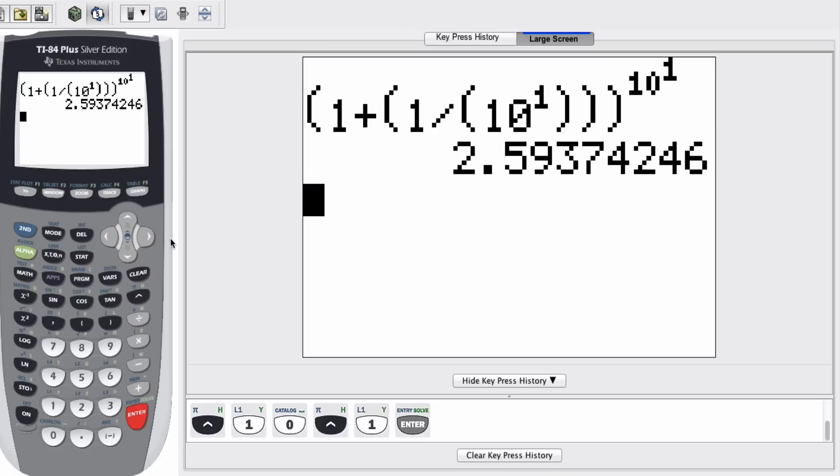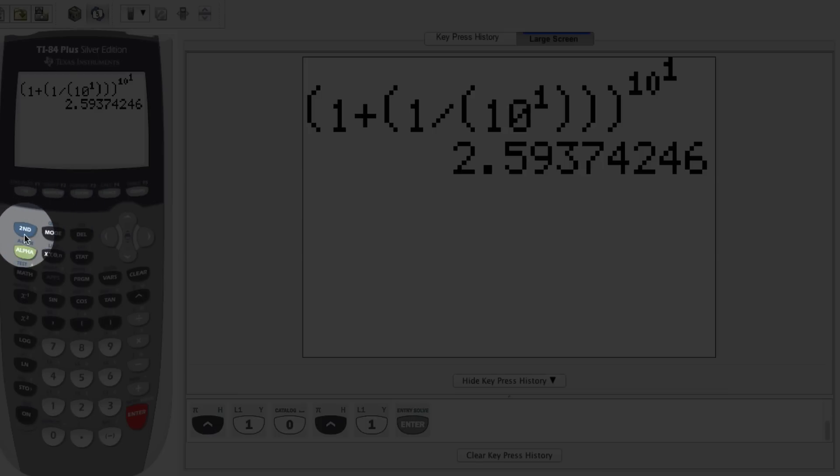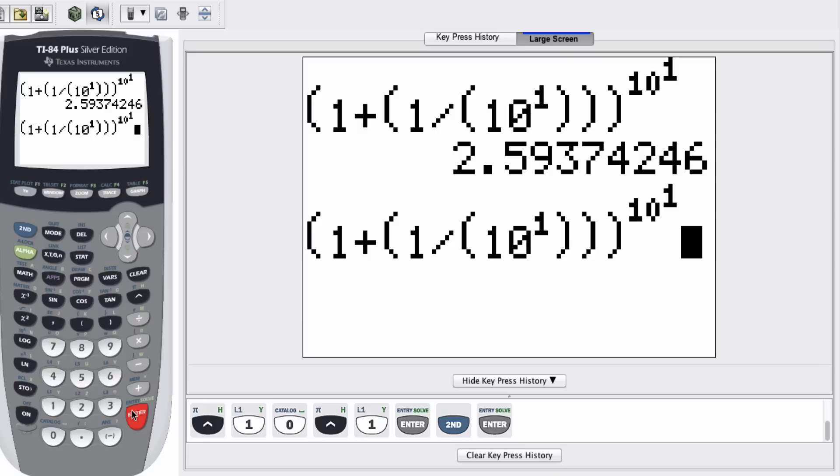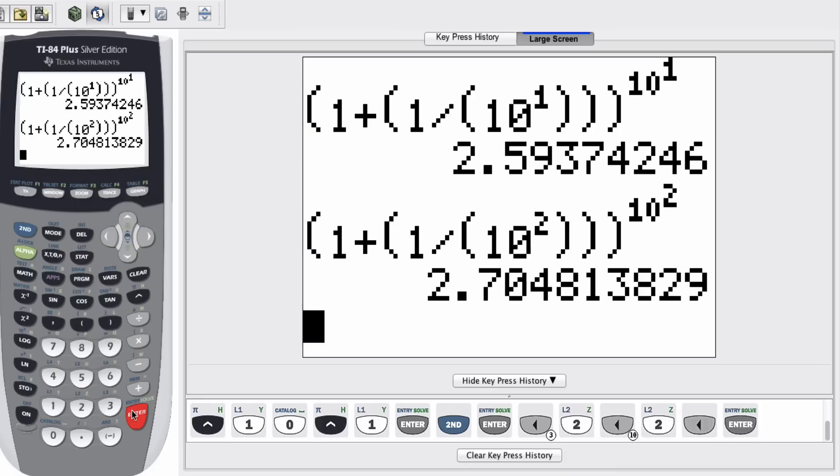Now the really nice thing that we can do in our calculator is I can actually bring up what I've previously typed in. So I'm going to press second, entry. And I can use my arrow buttons now, and I'm going to, wherever there was a 10 to the first, I'm going to replace that to the first power with the second power. And then press enter.